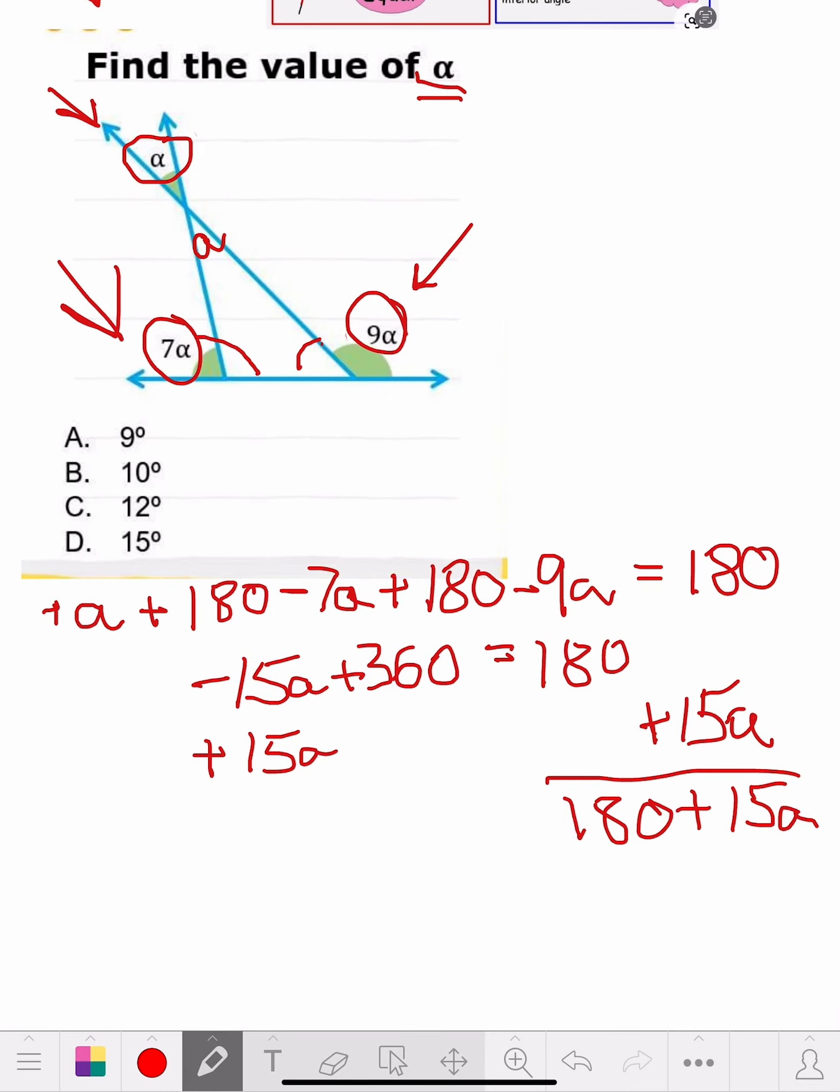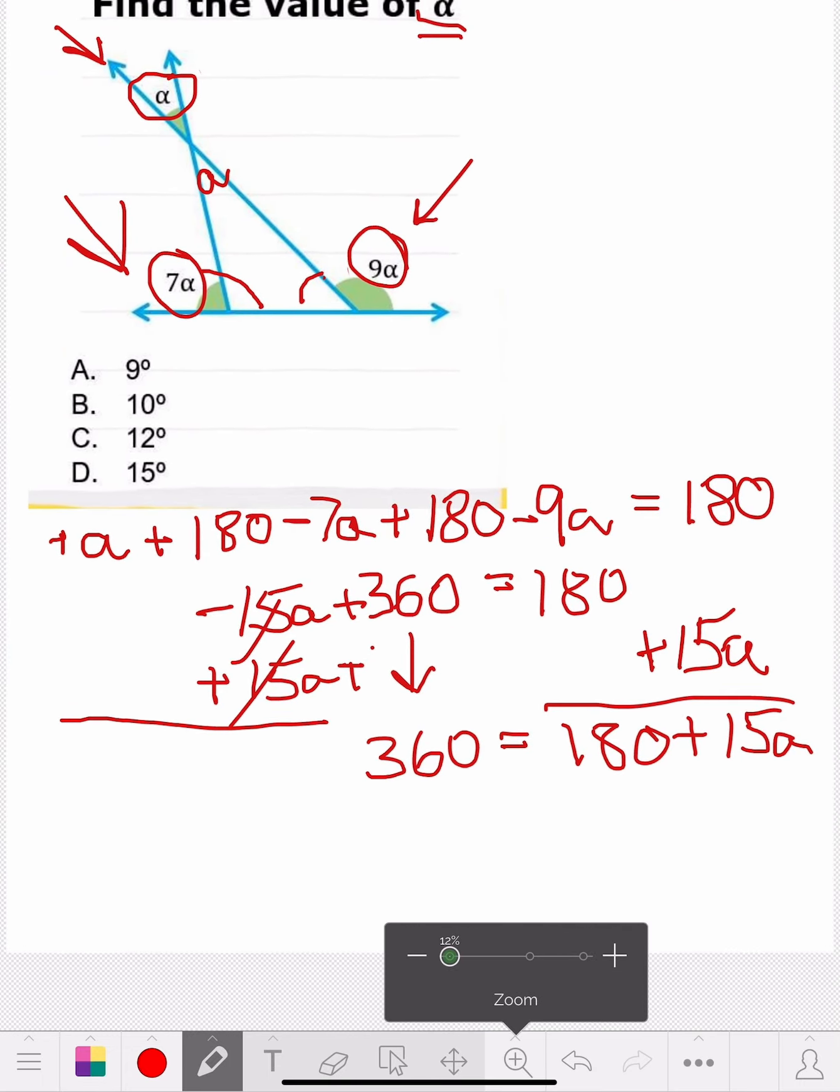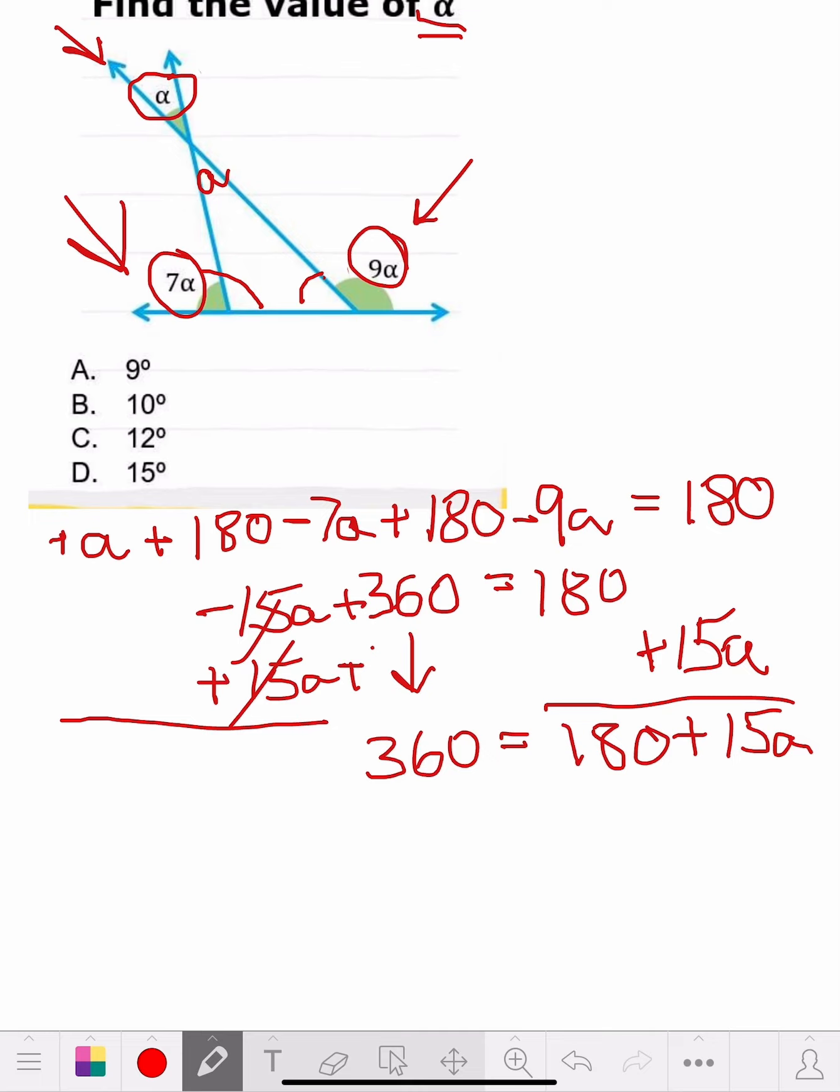So let's bring this down. We got 180 plus 15A. Now, what do we got over this side? This is 15A plus 360. The 360 comes down, so we got 360. These two cross each other out. And that was it. So we got 360 equals 180 plus 15A.